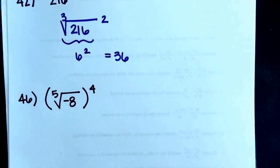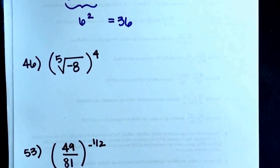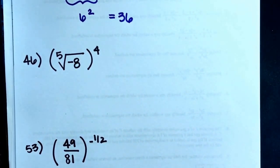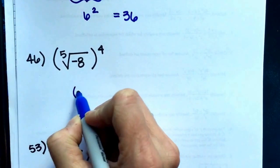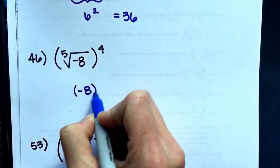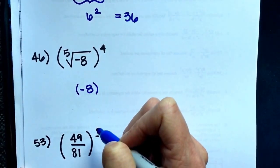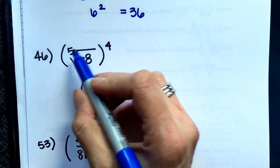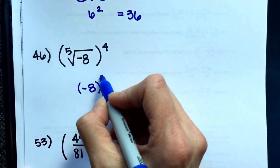Number 46 is just changing it into a rational exponent. So negative 8, the number inside the radical is the base, and then the exponent, power over root, so 4 over 5 for the exponent.